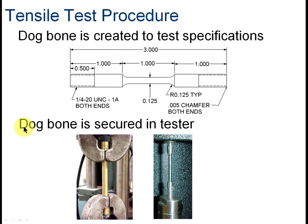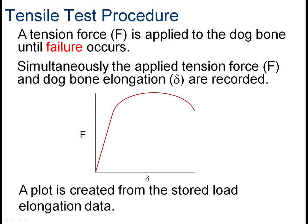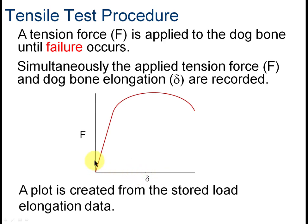As we pull the sample apart, we get a graph. The graph has force on the vertical axis and stretch — how much it stretched per unit of force — on the horizontal axis. We're looking at the tension force F applied until the material fails, and as it's pulled it stretches. The force is displayed on the vertical axis, and we can create that plot.